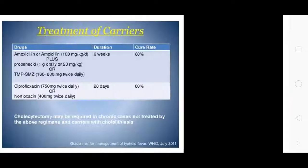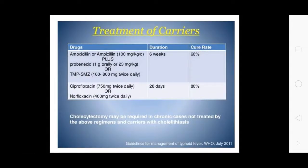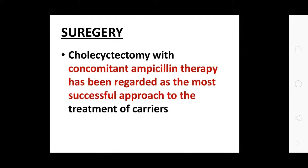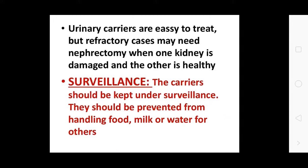Cholecystectomy may be required for chronic cases not treatable by the above drug regimens and for carriers with cholecystitis. Chloramphenicol is considered worthless for clearing the carrier state. Cholecystectomy has been regarded as the most successful approach for treatment of biliary carriers. Urinary carriers are easy to treat, but refractory cases may need nephrectomy where the kidney is damaged. Carriers should be kept under surveillance and prevented from handling food, milk, and water.